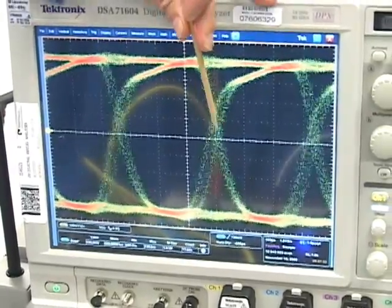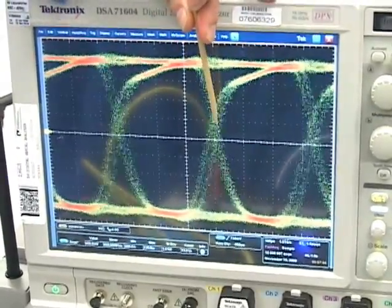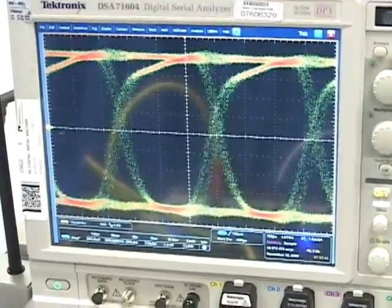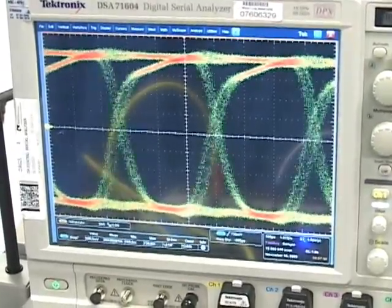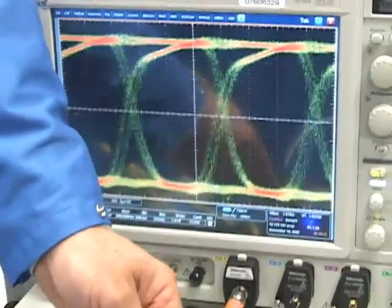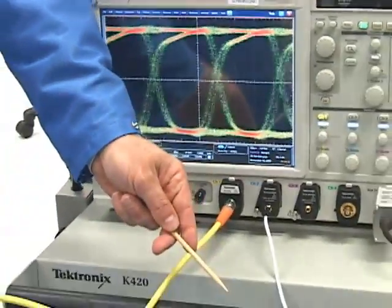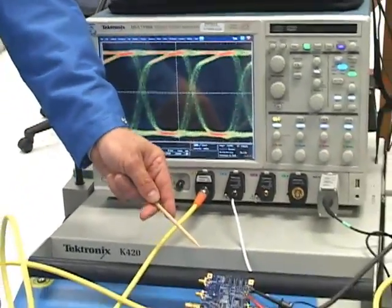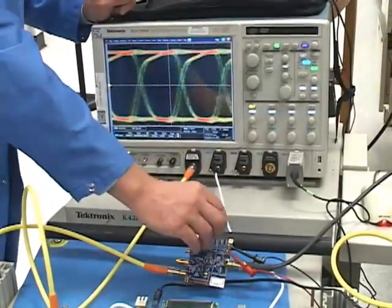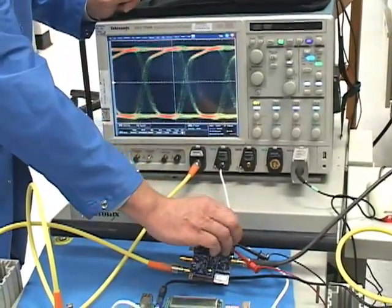I do have some alignment jitter in this signal, which I can see because of the wide vertical transitions. And I can improve that by changing my DA from a non-reclocking to a reclocking DA. And I do that by enabling the LMH0346, which is on the board.